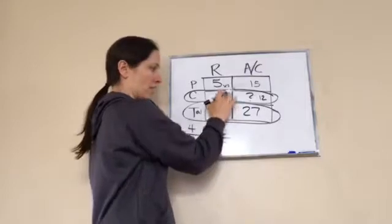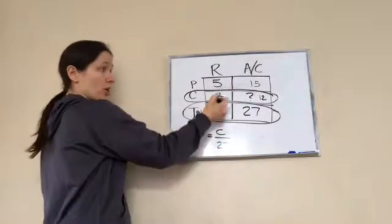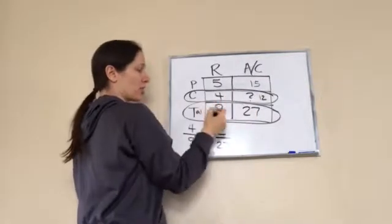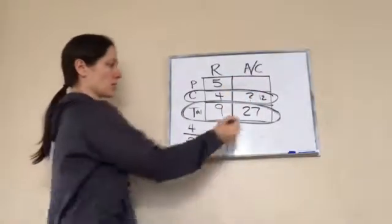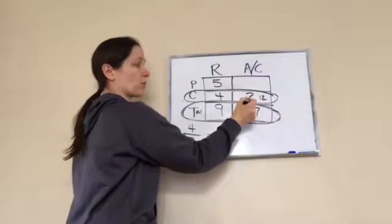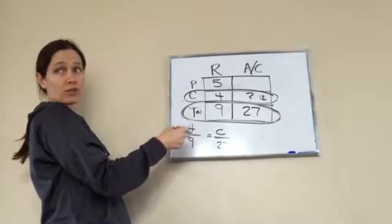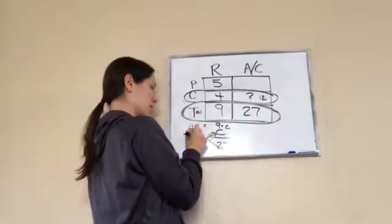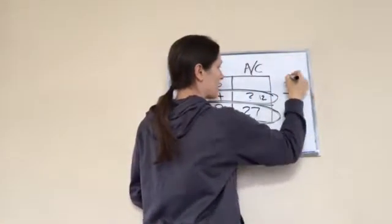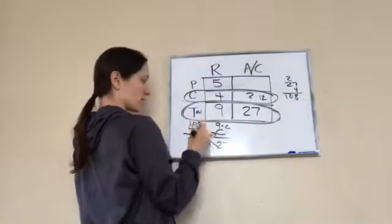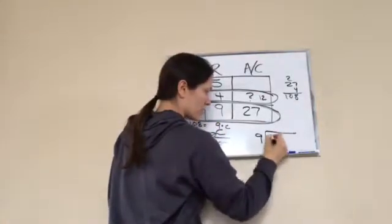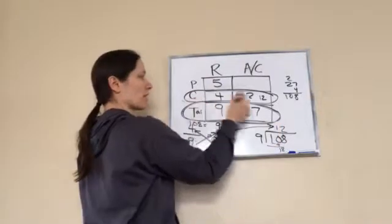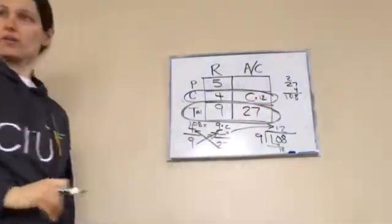But let's say you couldn't figure out the multiplier. What you do is take the row you know everything about and the row you want to know about, and set up equivalent fractions: four over nine equals C over 27. Then cross-multiply: nine times C equals 27 times four. 27 times four is 108, so nine times what equals 108? Divide: 108 divided by nine equals 12. So C equals 12.